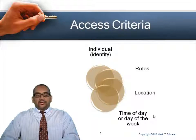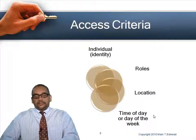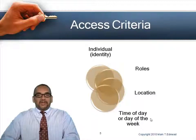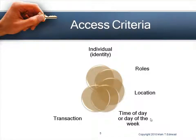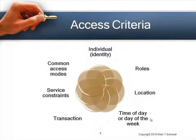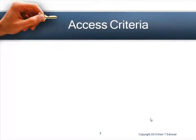Access criteria can also be determined by time of day or day of the week. For example, workers on the second or third shift might only have access between 8 o'clock at night and 3 in the morning. It could also depend on the transactions they're doing on the system, service constraints, and common access modes like read, write, and execute.